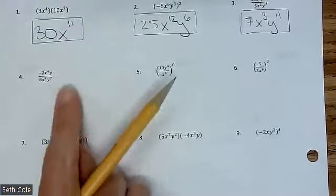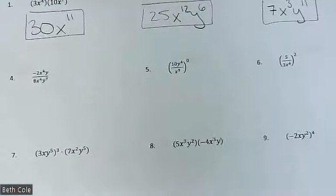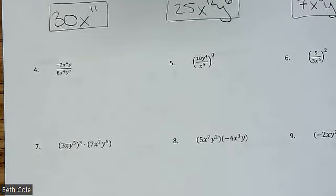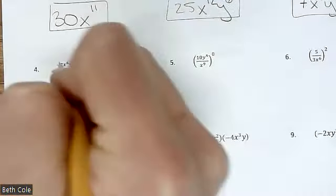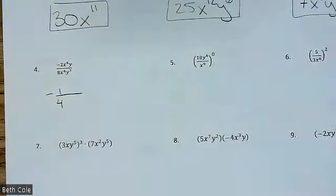Do the numbers first. You have negative 2 over 8. You're just reducing the fraction. How would you reduce negative 2 eighths? It'll be 1 over what? 4th. And it'll be negative just because there's a negative in the problem. So negative 1 fourth. I'm going to make the fraction bar a little bit bigger.